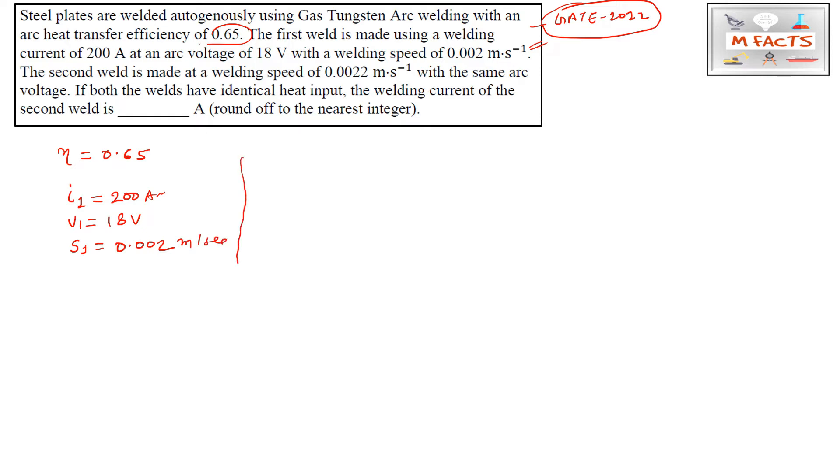For the second weld, the welding speed S₂ is 0.0022 meter per second with the same arc voltage, meaning V₂ equals V₁. If the welds have identical heat input, we can assume Q₁ is the heat input for the first and Q₂ for the second weld, so Q₁ = Q₂. This is the condition given. We need to find the welding current of the second weld, the i₂ value.